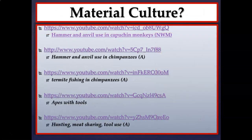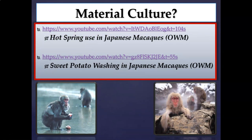The video clips in the module are important for completing the primate behavior analysis discussion. You'll look at hammer and anvil use in capuchin monkeys and in chimpanzees, termite fishing in chimpanzees, various examples of apes using tools, hunting and meat sharing with tool use in chimpanzees, Japanese macaques in hot springs, and Japanese macaques doing sweet potato washing.